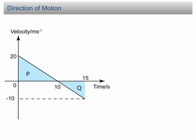For example, if an object moves upward initially, we take upward as positive. If it moves downward initially, then we take downward as positive.